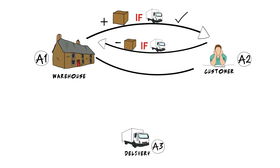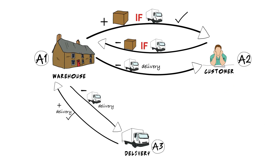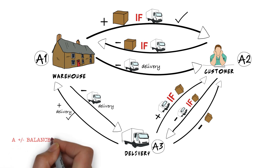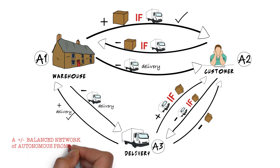Finally, we repeat the conditional pattern for the delivery agent, this time promising its own outcome — to hand over the package to the customer, if the package is actually provided by the warehouse. In fact, it's already promised to accept this service from the warehouse, so from its perspective it sees the warehouse as the third party in its relationship with the customer. This completes a plus-minus balanced network of autonomous promises.